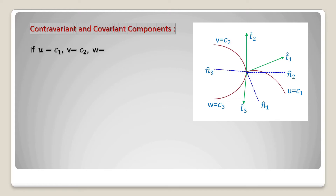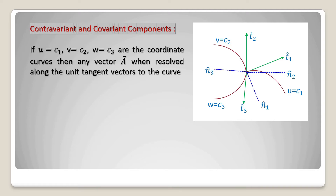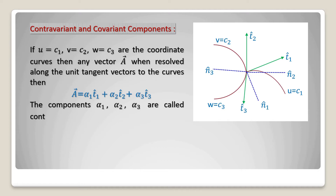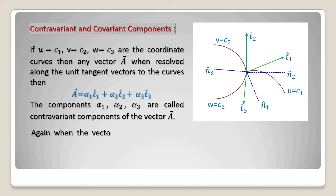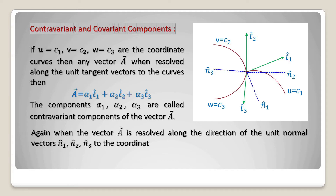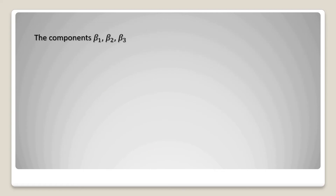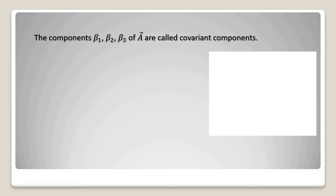Contravariant and covariant components. If we assume three coordinate curves as u equal to c1, v equal to c2, w equal to c3, then any vector a, when resolved along the unit tangent vectors to the curves, can be written as a equals alpha 1 t1 plus alpha 2 t2 plus alpha 3 t3. The components alpha 1, alpha 2, alpha 3 are called the contravariant components of vector a. Again when vector a is resolved along the direction of the unit normal vectors n1, n2, n3 to the coordinate curves, then vector a equals beta 1 n1 plus beta 2 n2 plus beta 3 n3. The components beta 1, beta 2, beta 3 of vector a are called covariant components.